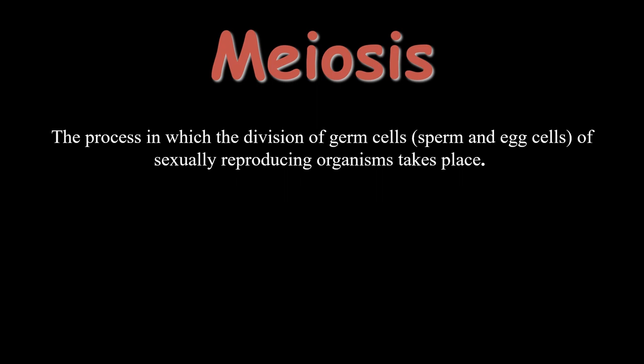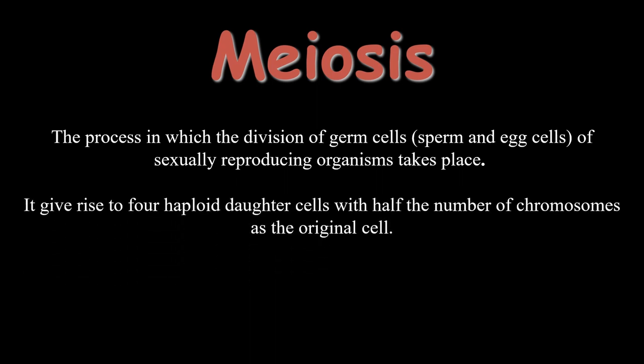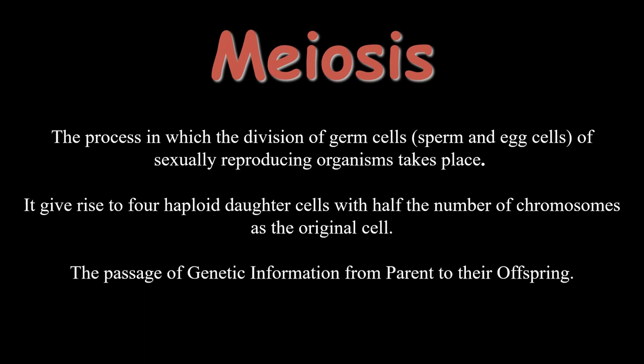At the end of meiosis, there is the production of four daughter cells that are haploid cells, which means that they will contain half the number of chromosomes as compared to their parent cells. In this process, the transfer of genetic information from parent to offspring also takes place.